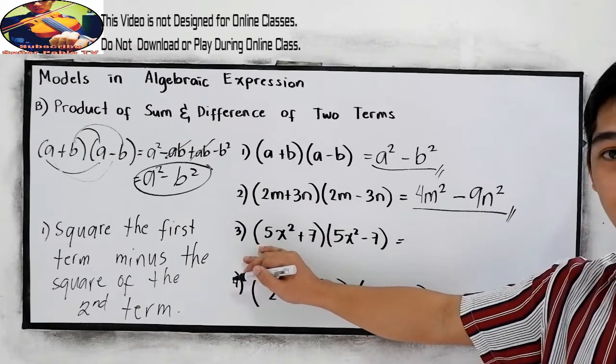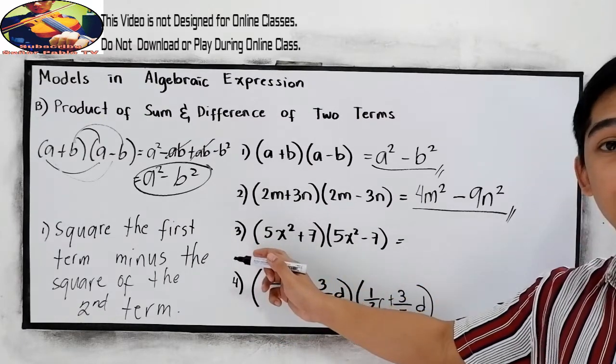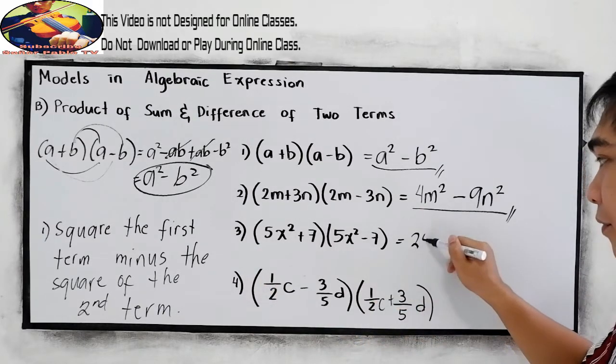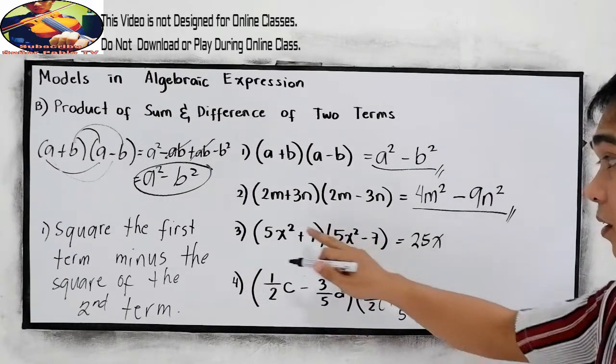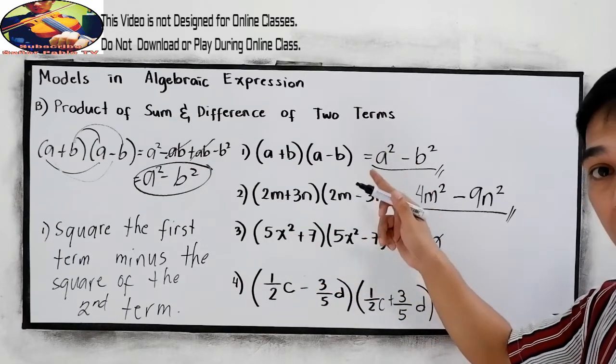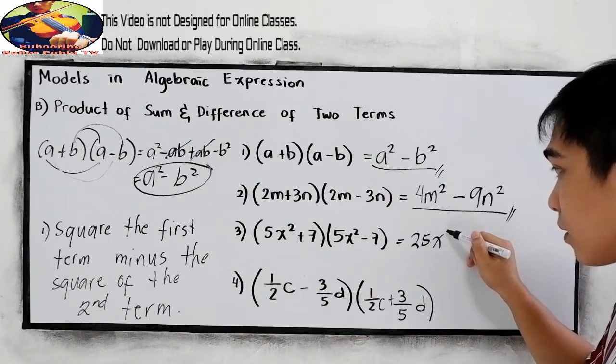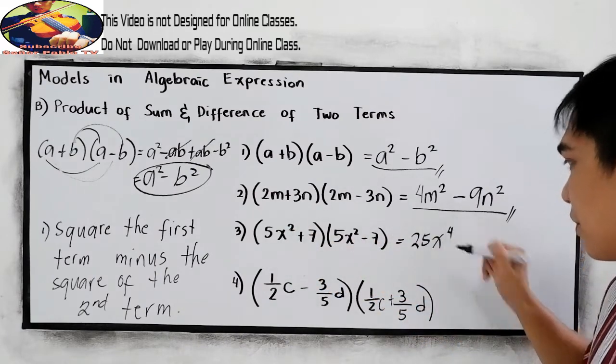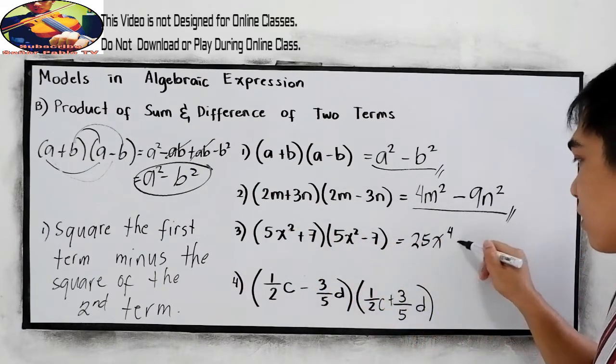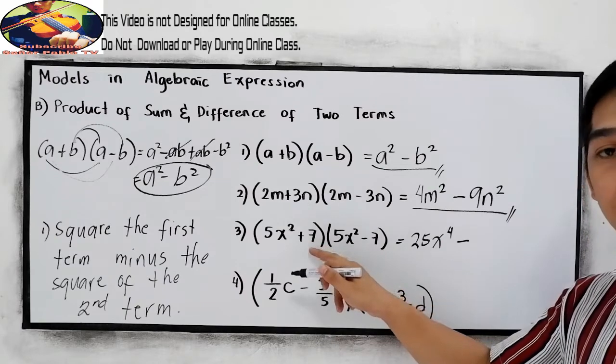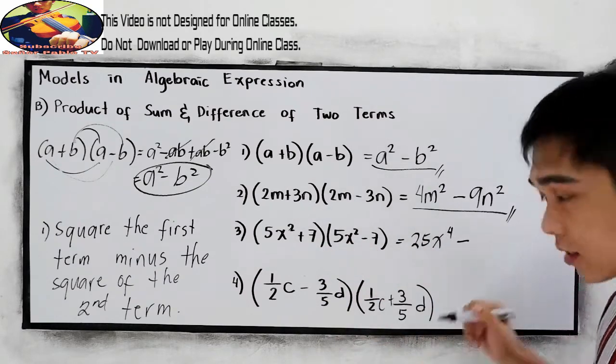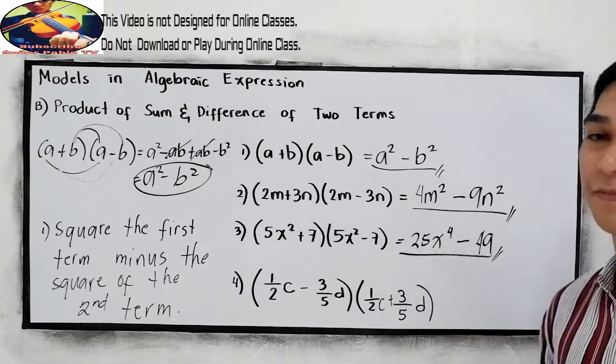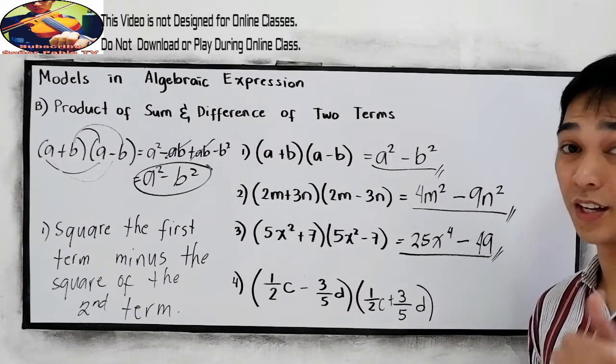Okay, let's check number three. Square the first term, 5 squared, that is 25. X squared, so 2 times 2 as our exponent, or 2 plus 2, that is 4. Minus, square the second term, 7 times 7, 49. Did you get the same answer?